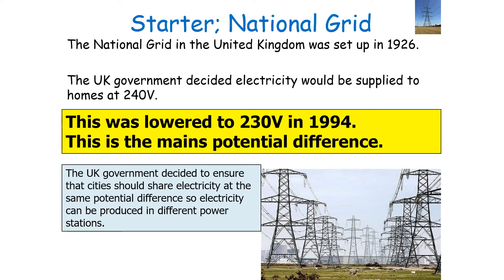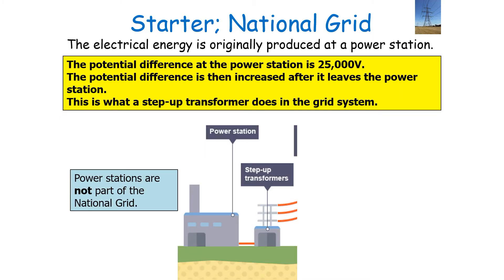Our national grid was set up in 1926, and we have a mains potential difference of 230 volts, decided in 1994, because it allows cities to share electricity at the same potential difference, so many power stations can support lots of different cities around the United Kingdom. Electrical energy is originally produced at a power station where the potential difference is 25,000 volts. The potential difference is then increased after it leaves the power station, which is what the step-up transformer does.